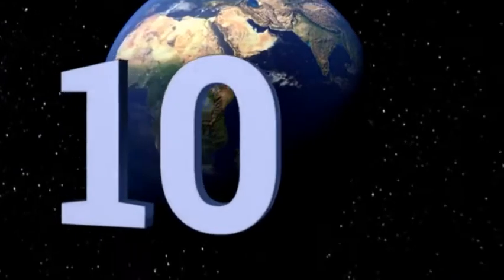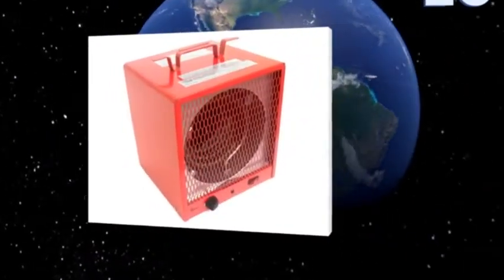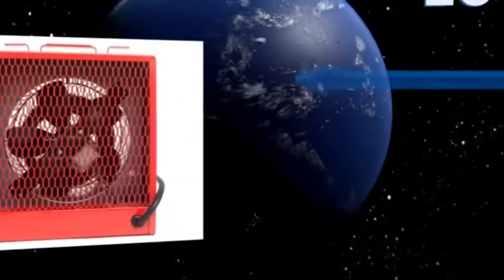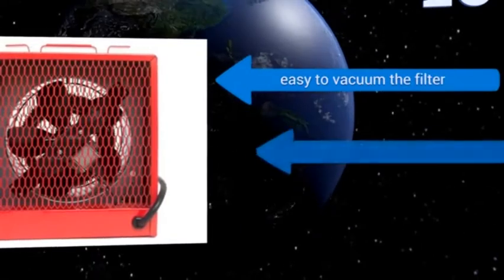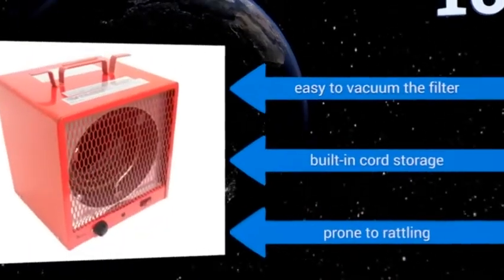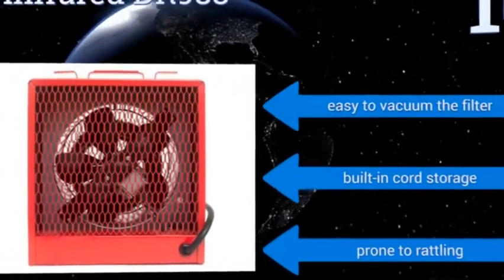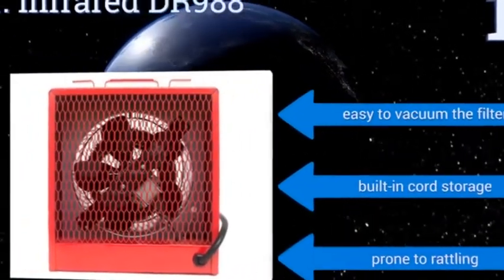Starting off our list at number 10, the Dr. Infrared DR988 has an impressive temperature range of up to 95 degrees to go with its 360 cubic feet per minute of airflow capacity. Its compact size makes it effortless to move around, but it doesn't seem to be built for the long haul. It is easy to vacuum the filter and it comes with built-in cord storage. However, it is also prone to rattling.